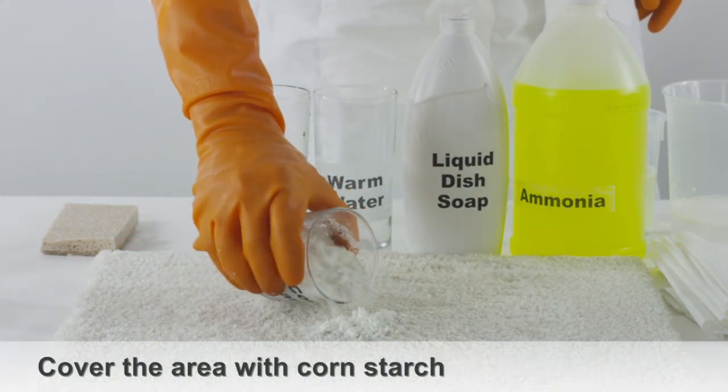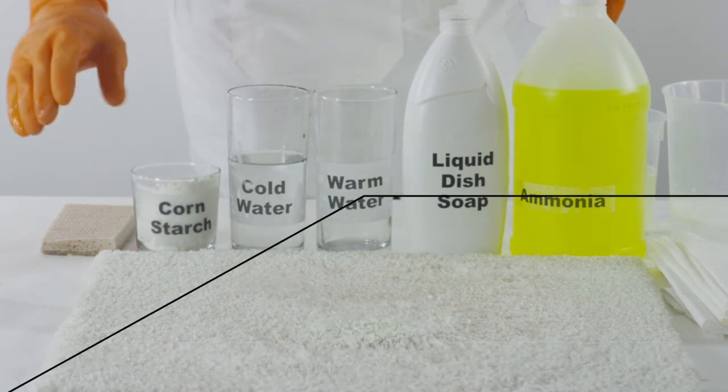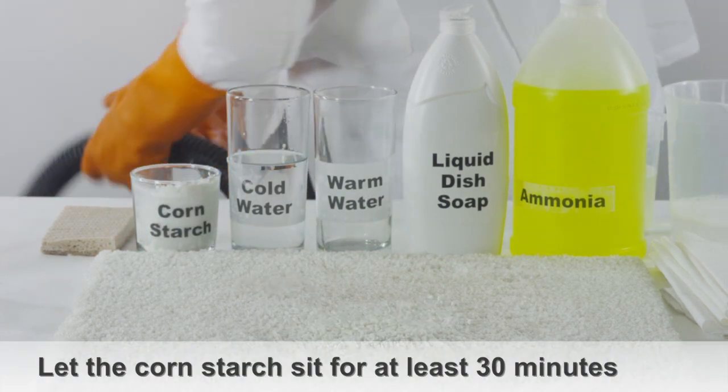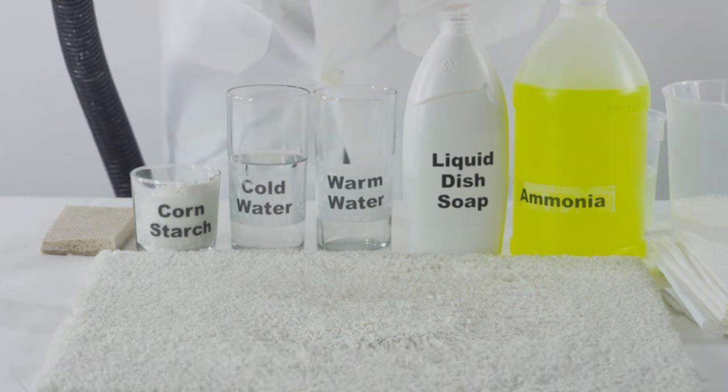Take enough cornstarch to cover the affected area and sprinkle it directly onto the carpet. Let the cornstarch sit on the stain for at least 30 minutes.